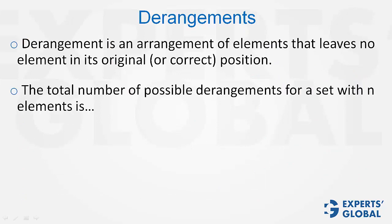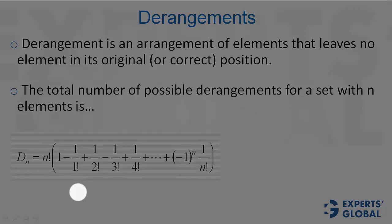The total number of possible derangements for a set with n elements is called dn when there are n elements, and you will look at this formula. See, the first two elements are basically adding up to 0. So, you can very well just eliminate this, and then 1 upon 2 factorial.